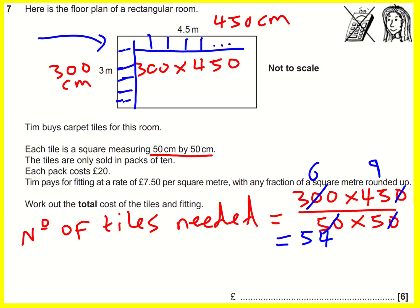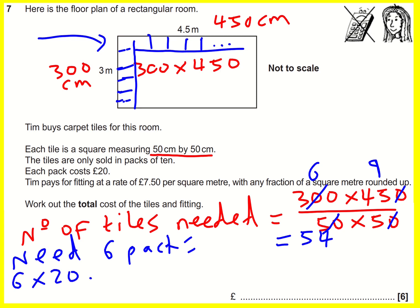The tiles are only sold in packs of 10, so we need to buy 6 packs. That's going to be 6 times £20, which is £120.